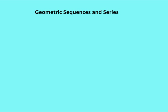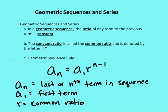Recall from our prior discussion on arithmetic sequences and series that what defines an arithmetic sequence is that the difference between consecutive terms is constant. Well, in a geometric sequence, the ratio between consecutive terms is constant. The ratio of any term to the previous term is constant, and that constant ratio is called the common ratio, denoted by the letter R.